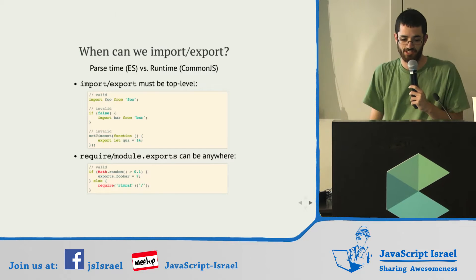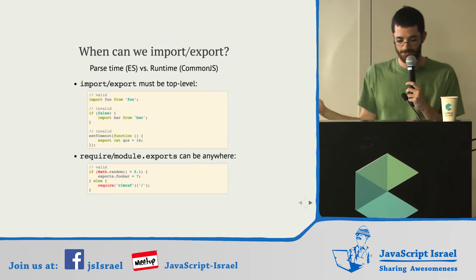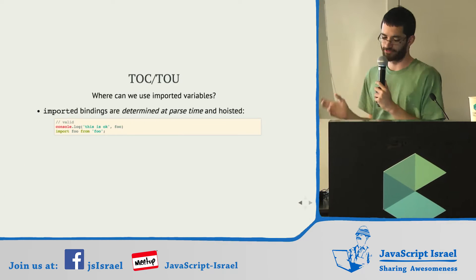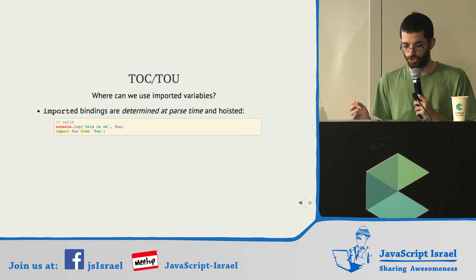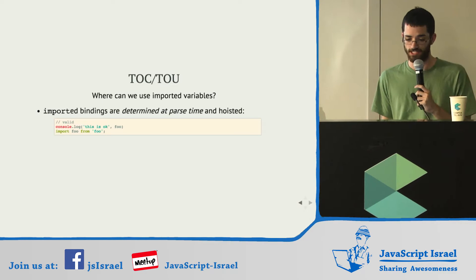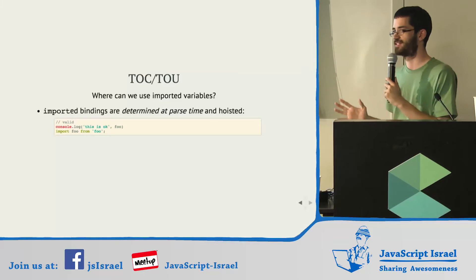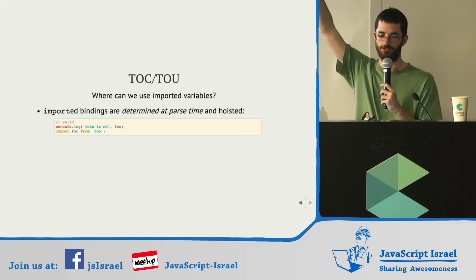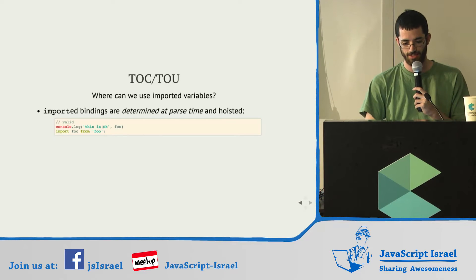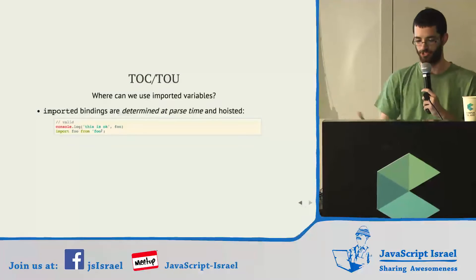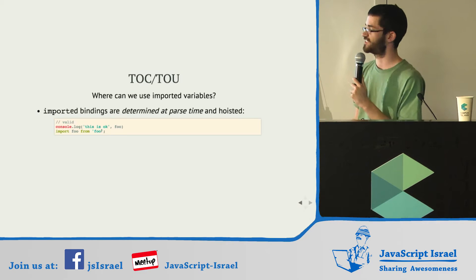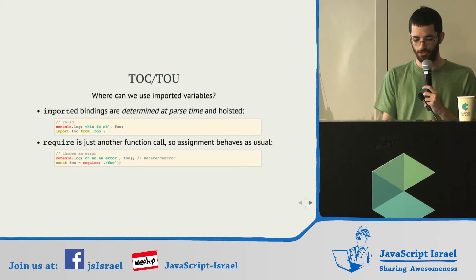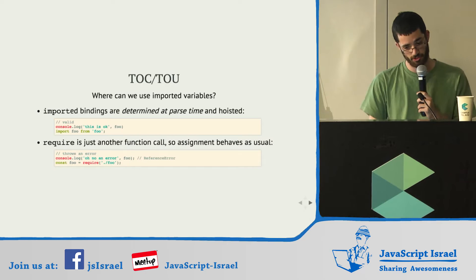CommonJS modules are just an object — exports is an object, require is a function, just do whatever. There's also a difference with time of call and time of use. Import sort of behaves like functions or var, where the variable is hoisted to the top of the block. So you can actually use a variable you import before actually importing it, which is weird. But it makes sense because imports are parsed at parse time. With require, it's just another function call.